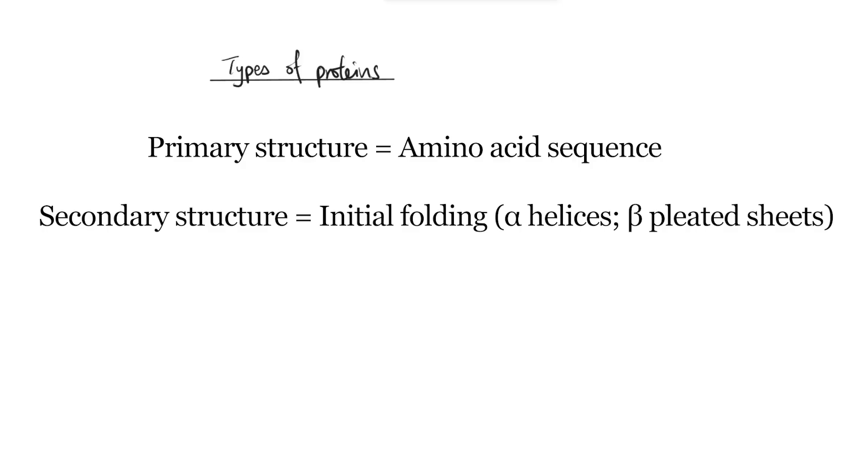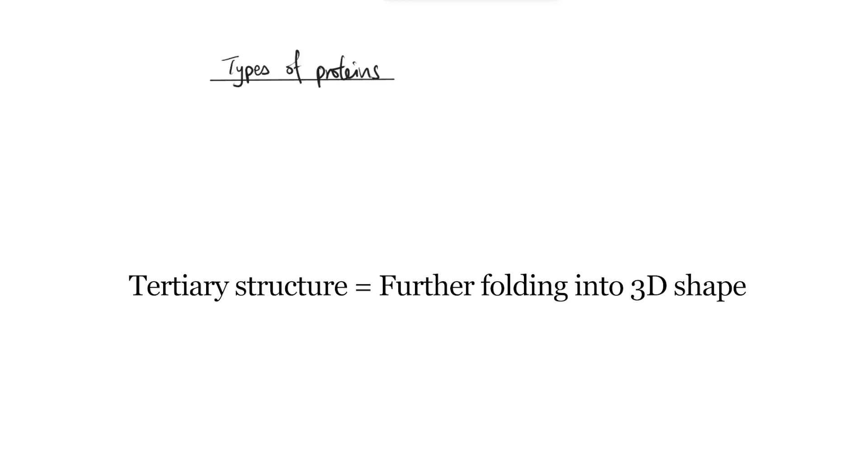In this video we're going to be looking at types of proteins. Generally speaking, we know that protein structure has different levels. The primary structure is the amino acid sequence. The secondary structure includes alpha helices and beta pleated sheets, which is about the initial folding of the polypeptide chain. Afterwards you get to the tertiary structure, which is further folding when the whole polypeptide actually folds into a 3D shape. This is where we start to look at different types of proteins determined by their tertiary structure.